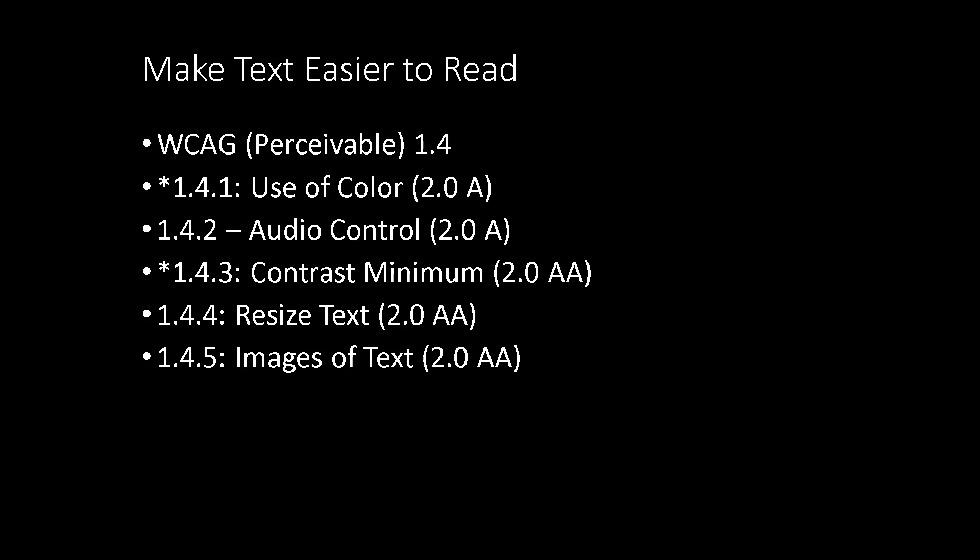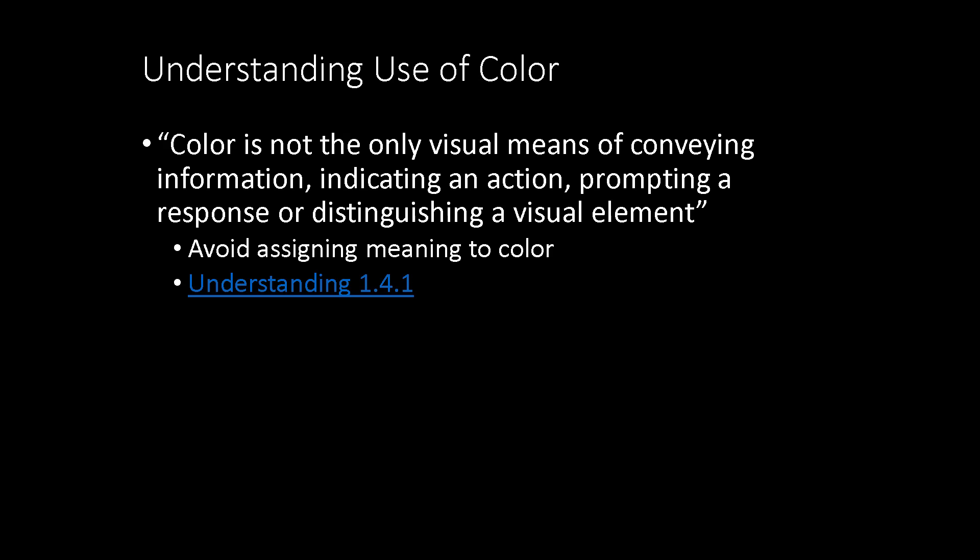There are five guidelines within the standard that are applicable to Version 2 Level A of the Web Content Accessibility Guidelines. We are going to focus on 1.4.1, Use of Color, and 1.4.3, Contrast Minimum.